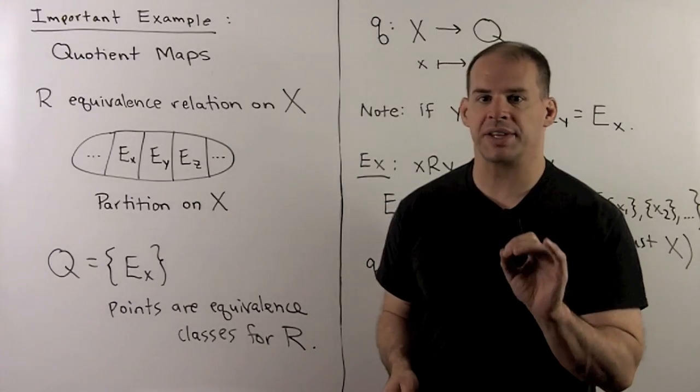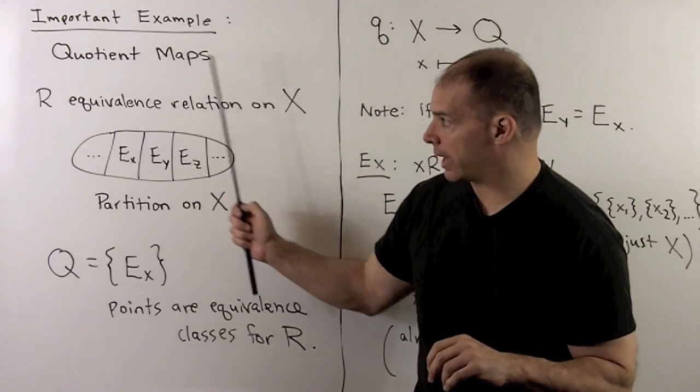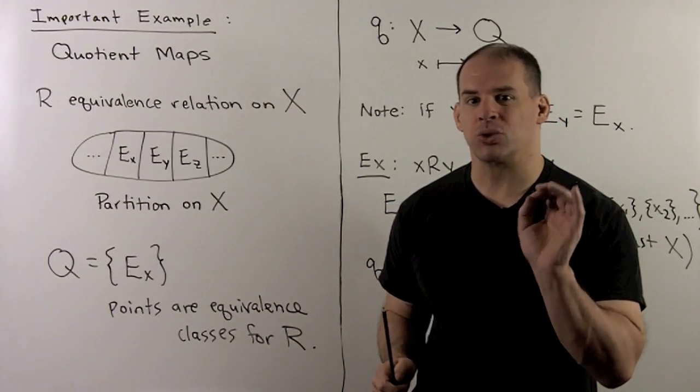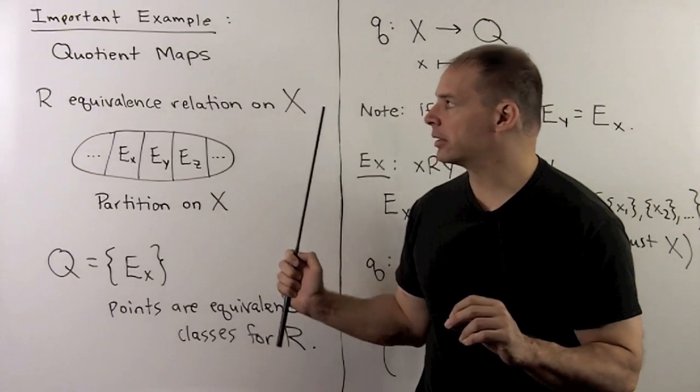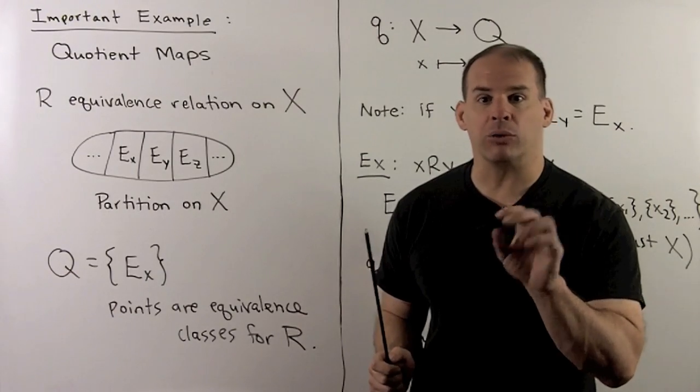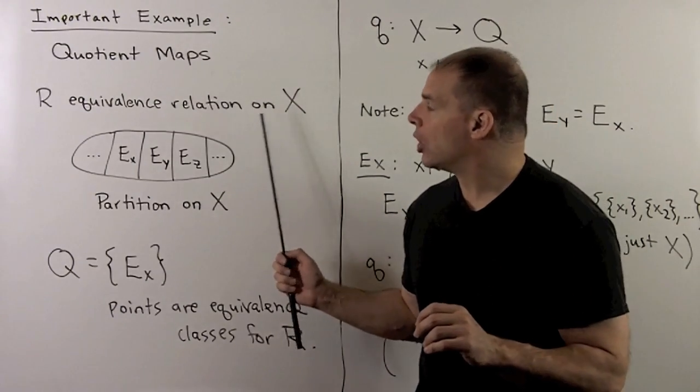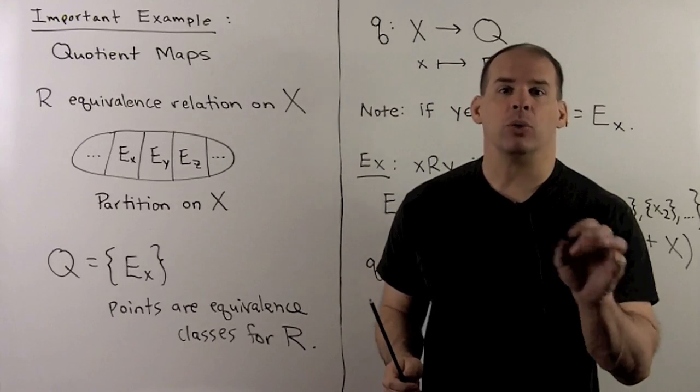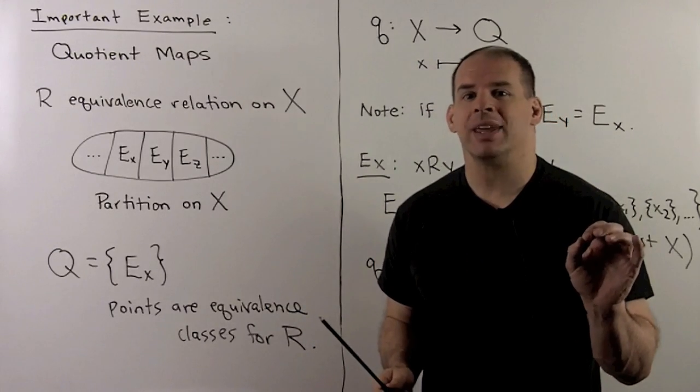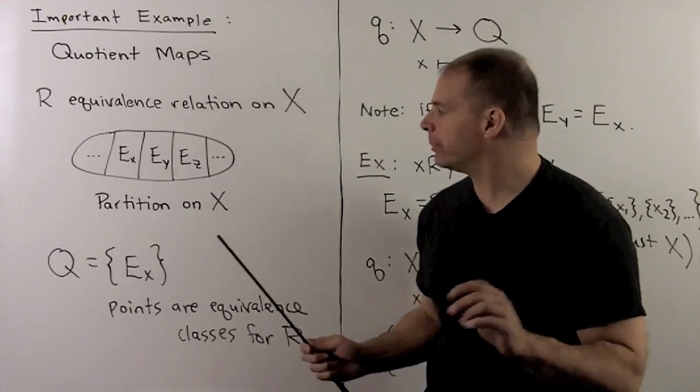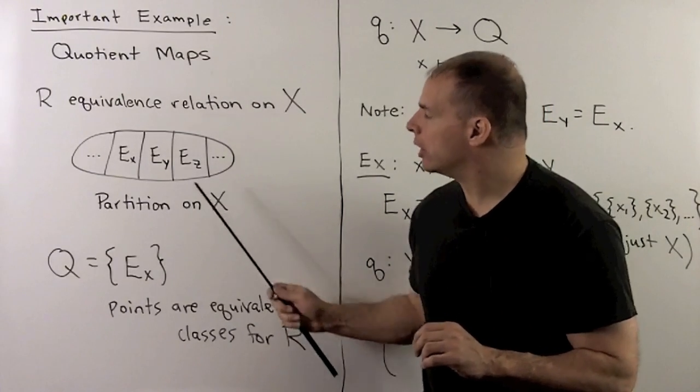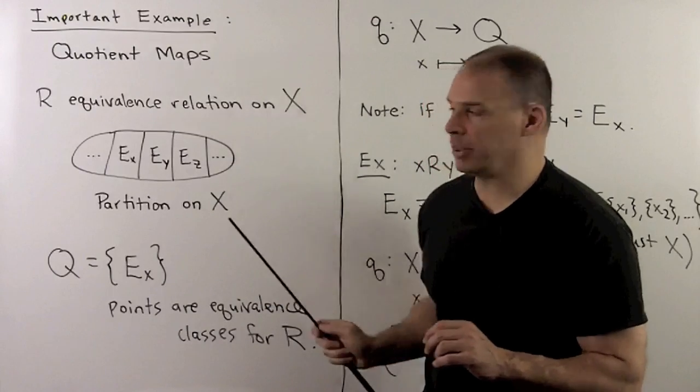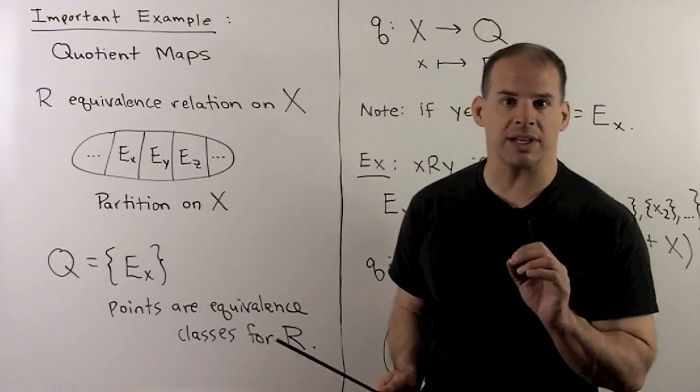Perhaps the most important example, we have quotient maps. For these, we start with an equivalence relation R on X. So, you may want to go back and review equivalence relations now. Recall, if I have an equivalence relation on X, we form equivalence classes. Then those equivalence classes form a partition of our set X. So, the idea here, we're just going to take X and just chop it up into pieces. Those pieces are the equivalence classes.